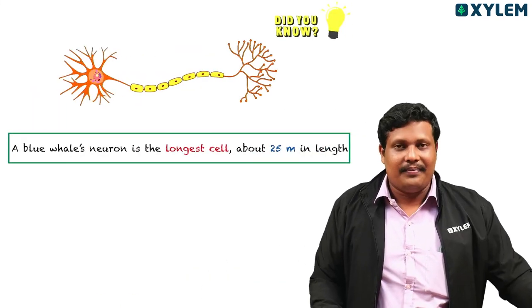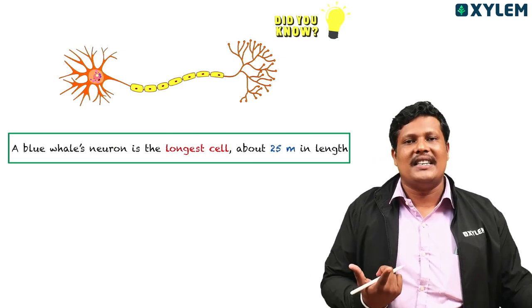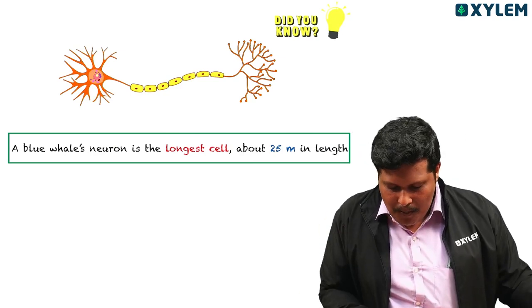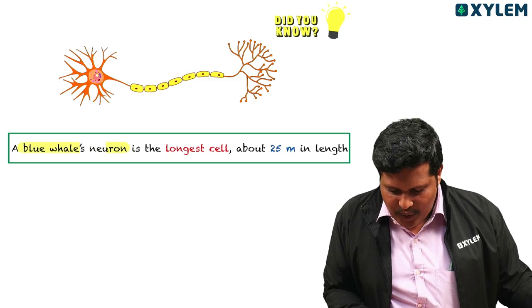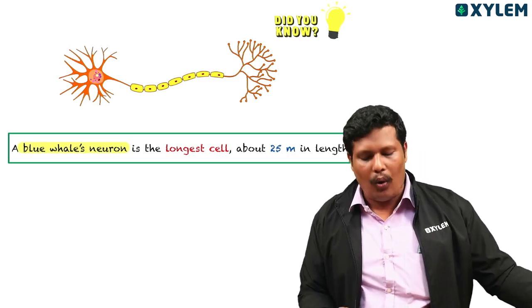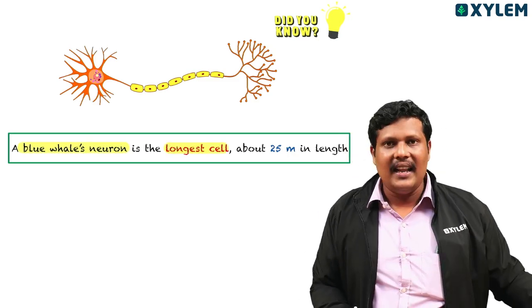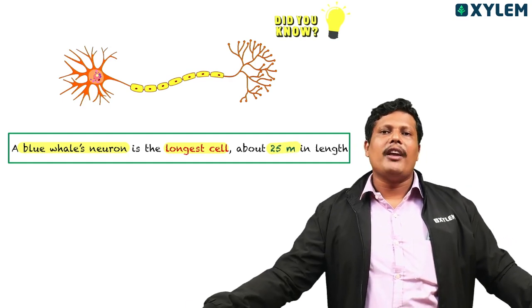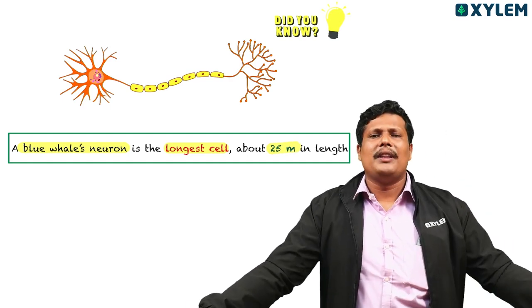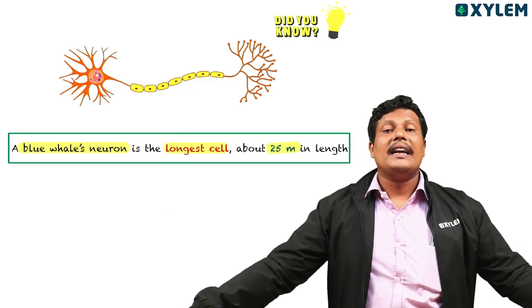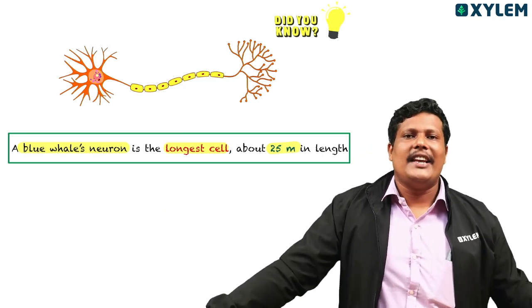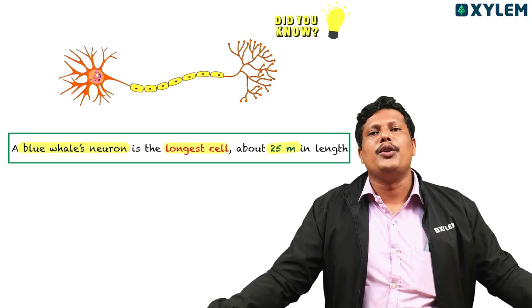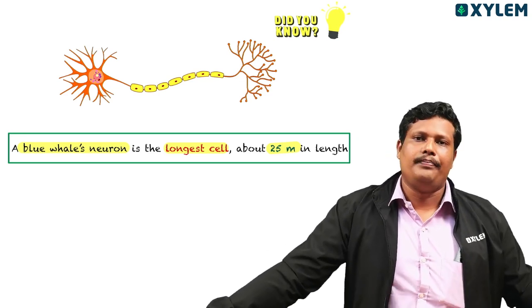The longest cell is the neuron. Specifically, the blue whale's neuron is the longest cell, approximately 25–30 meters in length. The longest cell is the blue whale's neuron.